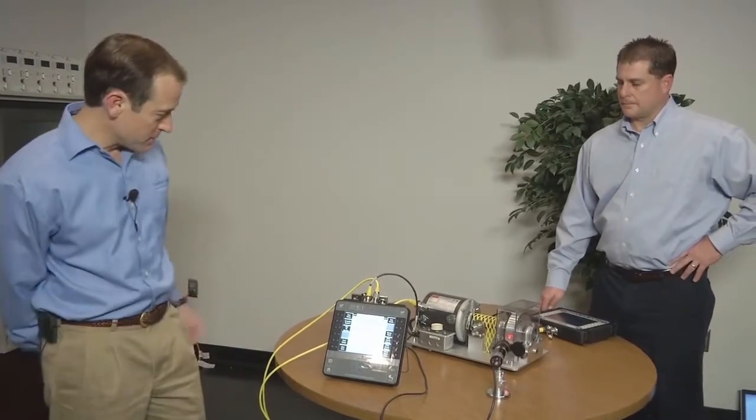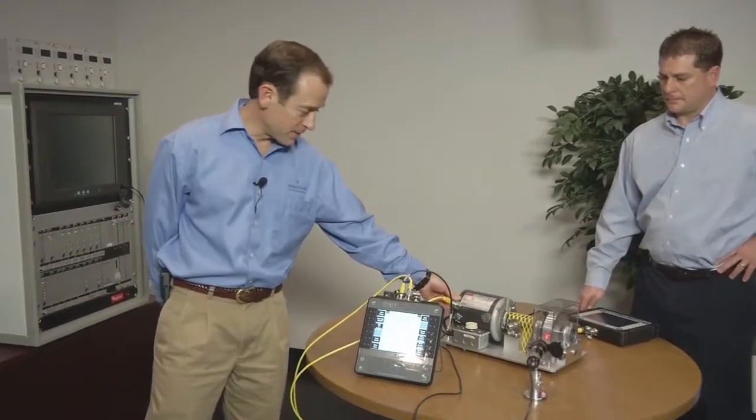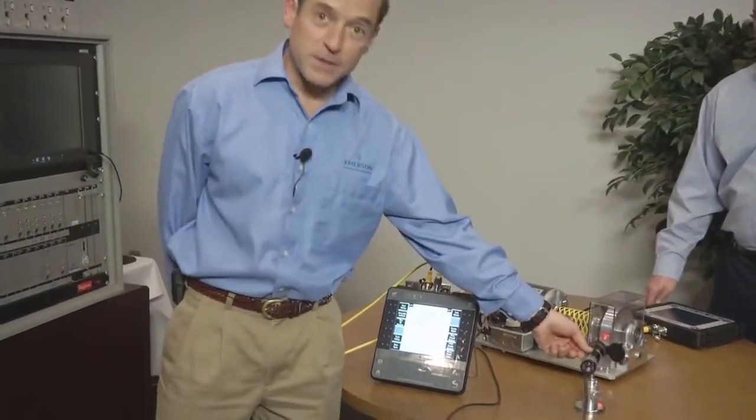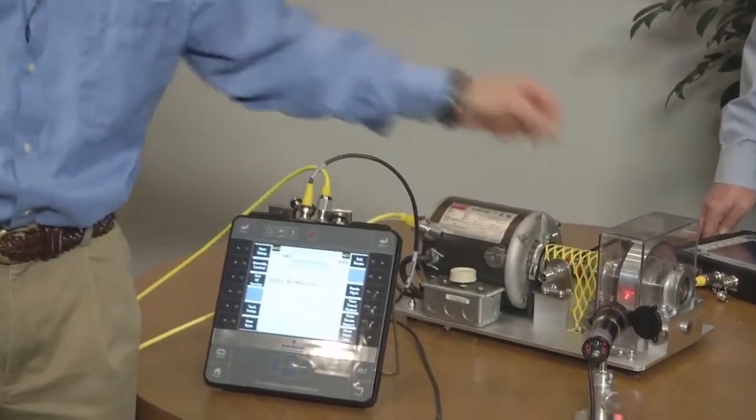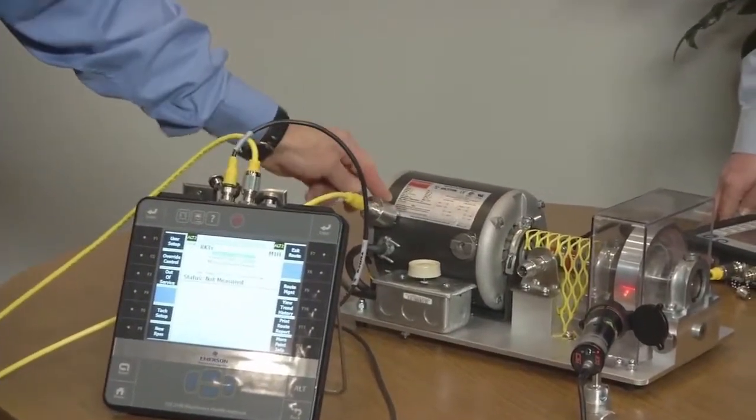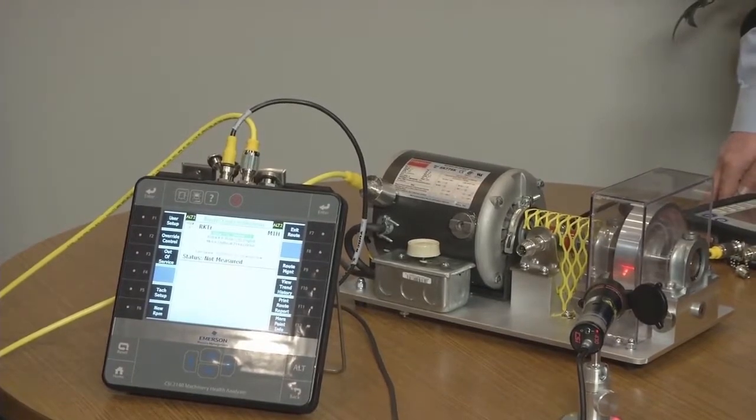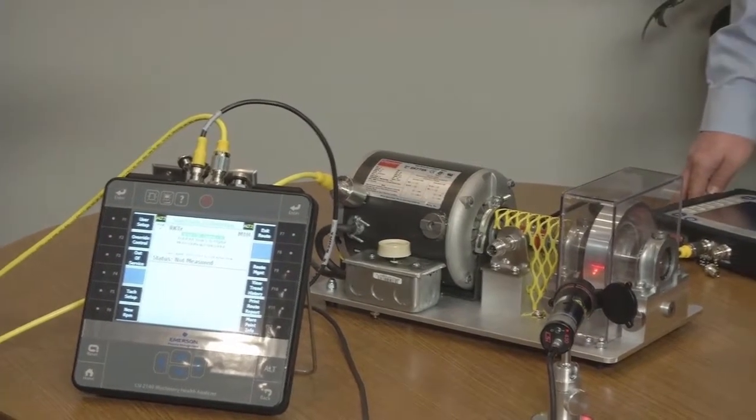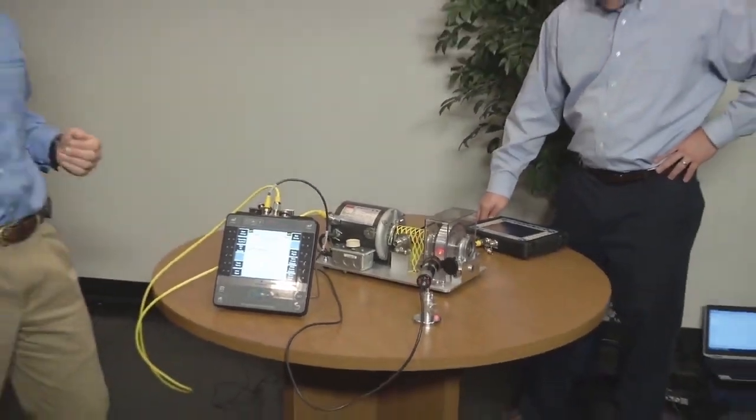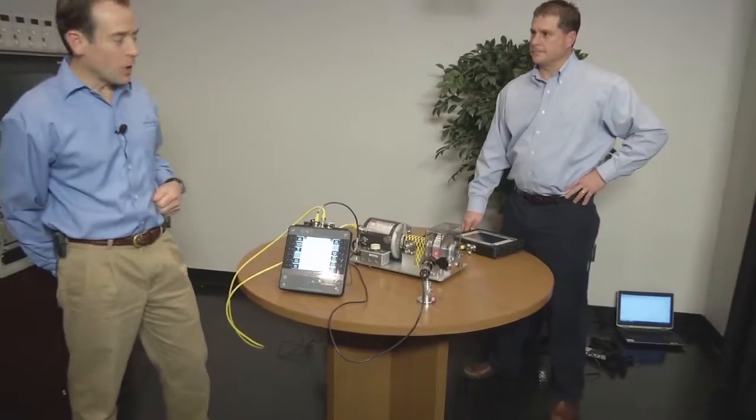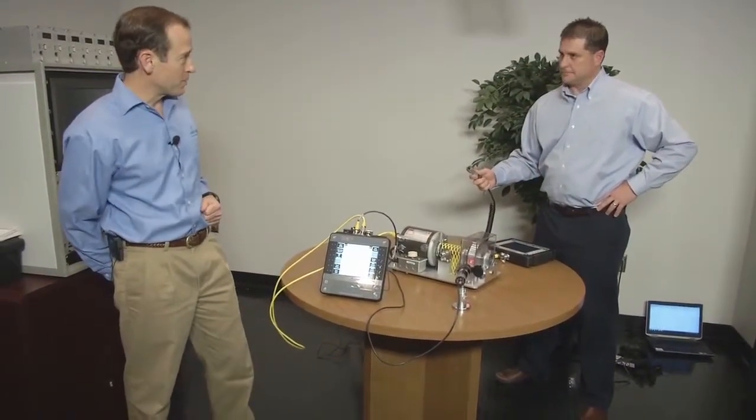In this demonstration, the CSI 2140 is equipped with the Tri-X accelerometer and the SpeedView laser speed detection. The SpeedView will be picking up the speed and the Tri-X I'll be moving down the machine train. But to make this demonstration a little more effective, we want to have Drew use the 2130. Drew will be doing the old method of data collection and I'll be demonstrating the new method of data collection with the 2140.